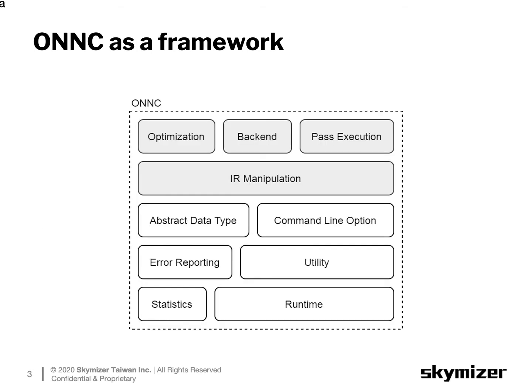This diagram shows the major modules available in the ONNC framework. We categorize them by functionalities. The ones in gray boxes are the most important modules for compiler developers, and we will cover them one by one in this session.